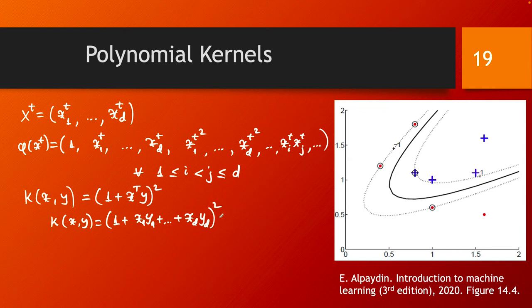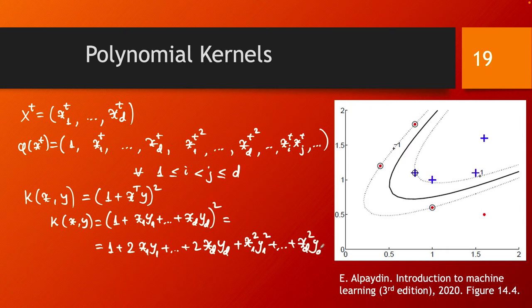This equals 1 plus 2x1 y1 plus 2xd yd, plus x1 squared y1 squared, plus xd squared yd squared.